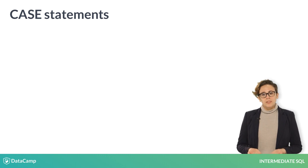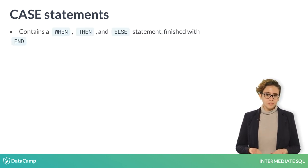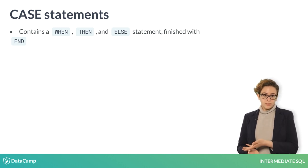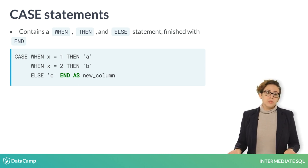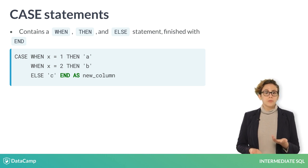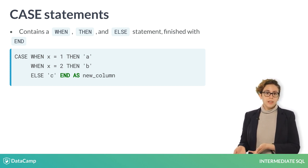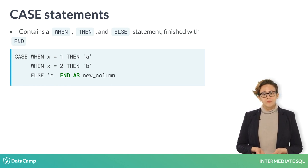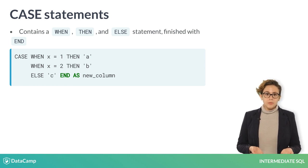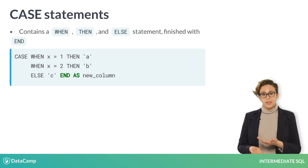This is where the CASE statement comes in. CASE statements are SQL's version of an if-this-then-that statement. CASE statements have three parts: a WHEN clause, a THEN clause, and an ELSE clause. The WHEN clause tests a given condition, say x equals one. If this condition is true, it returns the item you specify after your THEN clause. You can create multiple conditions by listing WHEN and THEN statements within the same CASE statement. The CASE statement is then ended with an ELSE clause that returns a specified value if all your WHEN statements are not true. When you have completed your statement, be sure to include the term END and give it an alias. The completed CASE statement will evaluate to one column in your SQL query.